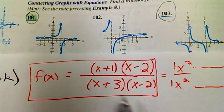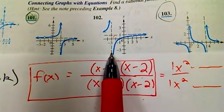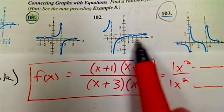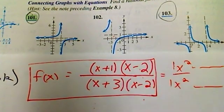And the bottoms should correspond to any vertical asymptotes. Oh, and then if we have a hole, of course, the ones that cancel, right?